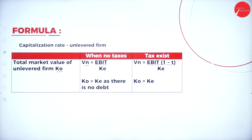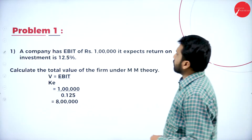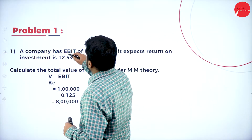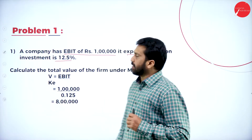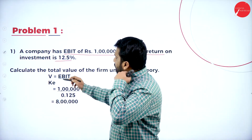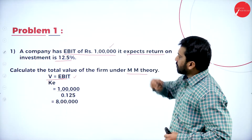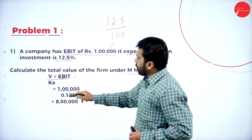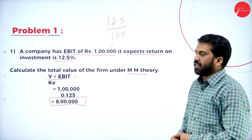Problem 1 — a simple 5-mark question. A company has EBIT of Rs. 1 lakh and an expected return on investment of 12.5%. Calculate the total value of the firm under the MM approach. Value = EBIT ÷ cost of equity = 1,00,000 ÷ 0.125 = Rs. 8,00,000. The final answer is 8 lakh.